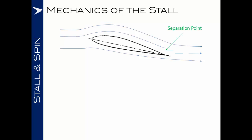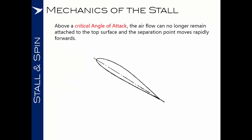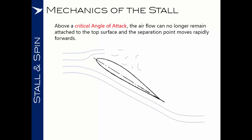What is happening at the stall? Here we have a wing in normal flight. The airflow, whilst we consider it as smooth streamlines in simplified diagrams, actually starts to separate from the airfoil towards the trailing edge of the wing. At low angles of attack this separation point is very close to the trailing edge and isn't very noticeable. As we increase the angle of attack, the separation point starts to move forwards. Once above the critical angle of attack, the airflow can simply no longer remain attached to the top surface of the wing.